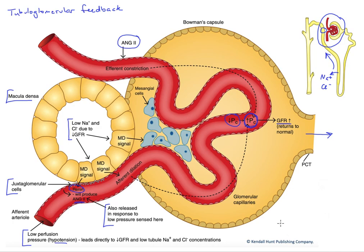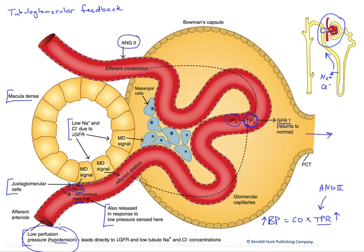Finally, angiotensin II also causes systemic constriction — constriction of arterioles throughout the body. If you recall, blood pressure equals cardiac output times total peripheral resistance. So angiotensin II constricts our arterioles, increasing resistance, which increases blood pressure — solving part of our initial problem of low driving pressure. Overall, we're resolving our low blood pressure issue, but we're also helping maintain GFR even if blood pressure remains low.